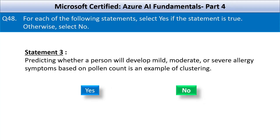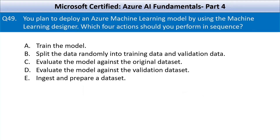I hope you are liking the content — please make sure to give us a thumbs up if you are enjoying and learning from our videos. Question number 49: you plan to deploy an Azure Machine Learning model by using the Machine Learning Designer. Which four actions should you perform in sequence? The options are: train the model; split the data randomly into training data and validation data; evaluate the model against the original data set; evaluate the model against the validation data set; ingest and prepare a data set. The first step is to load and prepare your data before any analysis or model building.